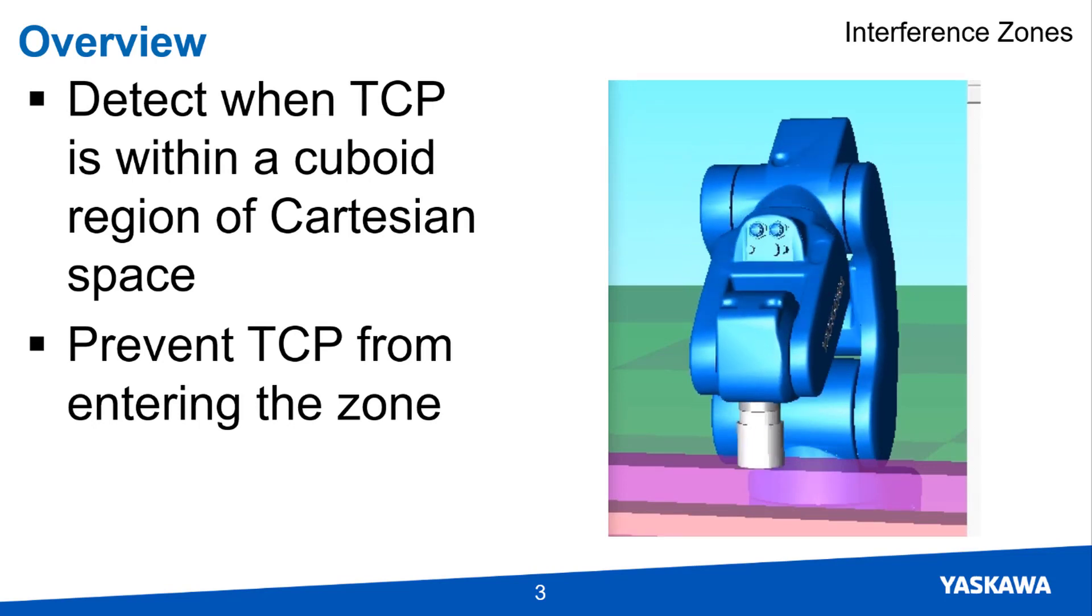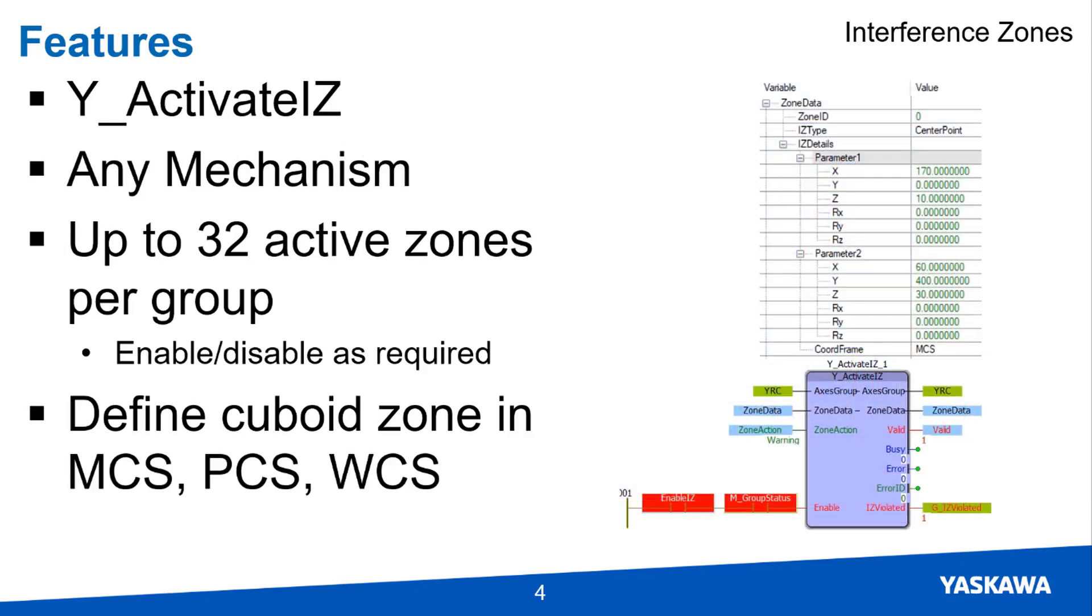Optionally, the tool center point can be prevented from entering the interference zone. The function block Y_ActivateIZ from the PLCopen Part 4 library is used to program up to 32 simultaneous interference zones for each mechanism.